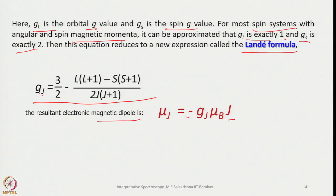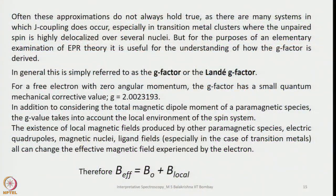These approximations do not always hold true, particularly in transient metallic clusters where the unpaired spin is highly delocalized over several nuclei involved in metal-metal bonding. For an elementary examination of EPR theory, understanding how the G factor is derived is useful. For a free electron with zero angular momentum, G = 2.0023193.